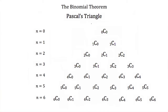Now that we understand combinations, let's talk about the binomial theorem. Before we can understand the binomial theorem, we need to understand Pascal's triangle. Pascal's triangle is the triangle we get when we write down all the different possible combinations of choosing different r values out of n possible values — for example, n equals 0 choosing 0, then n equals 1 choosing 0 or 1, then n equals 2, then n equals 3, and so on.